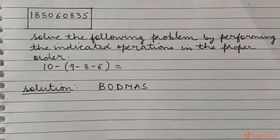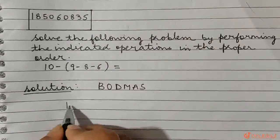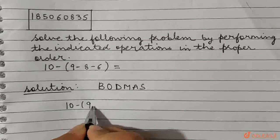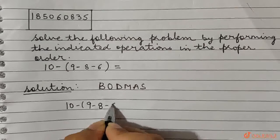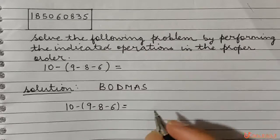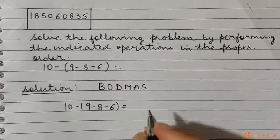We are going to follow this particular order. We have 10 minus 9 minus 8 minus 6. According to the BODMAS rule, first we need to solve the bracket.